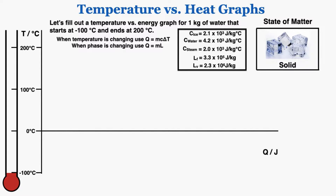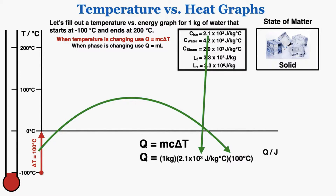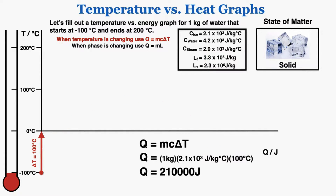The water starts at negative 100 degrees Celsius, which is the first point. As we move right along the x-axis, more heat is being added. Because it's not at its melting point yet, it won't be changing phase, so we use Q = mcΔT. The change in temperature is 100 degrees Celsius, the mass is 1 kilogram, and the specific heat of ice is 2.1 × 10³ J/kg·°C. That calculation gives 210,000 joules — so as temperature increases by 100°C, the water gains 210,000 joules.